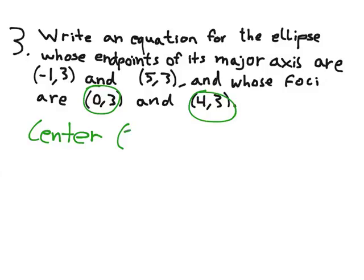If I average those, I get (2, 3). And I can also use these numbers to determine my a value. I should be able to go from my center and add a to get one number, subtract a to get the other. And that means a must be 3. 2 plus 3 gives me 5. And similarly, 2 minus 3 gives me negative 1.